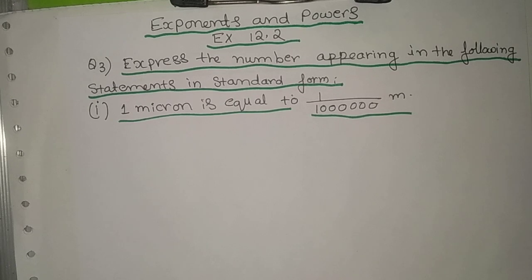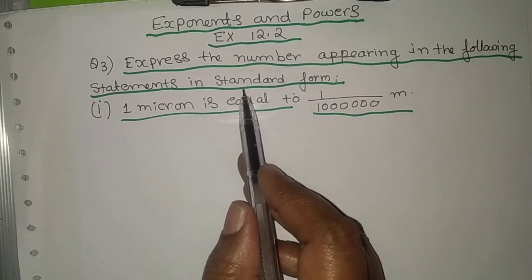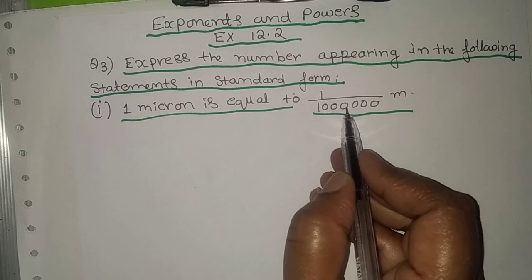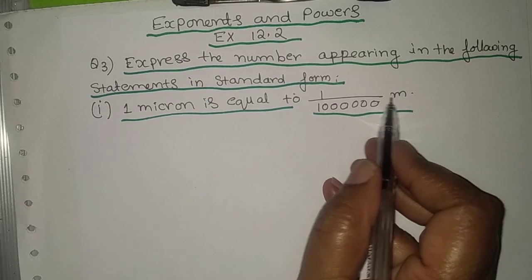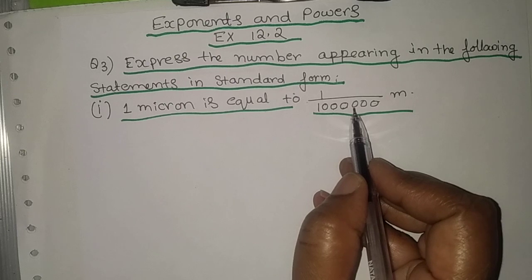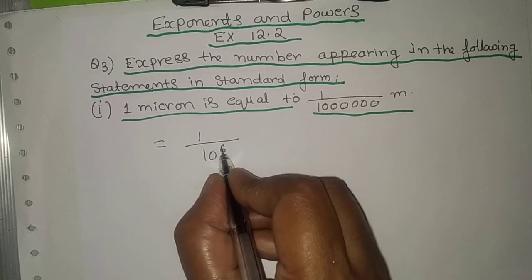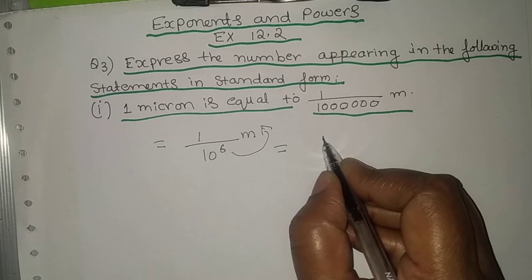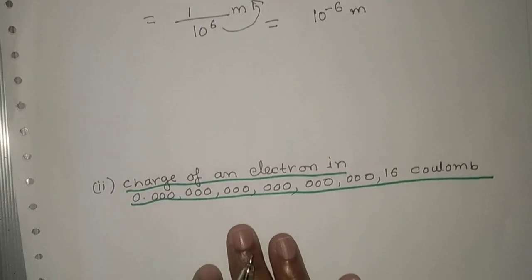Now we move to question 3: express the numbers appearing in the following statements in standard form. First: 1 micron is equal to 1 by 10 to the power 6 metres. So 1 micron equals 1 divided by 10 to the power 6 metres, which when written in standard form is 10 to the power minus 6 metres.